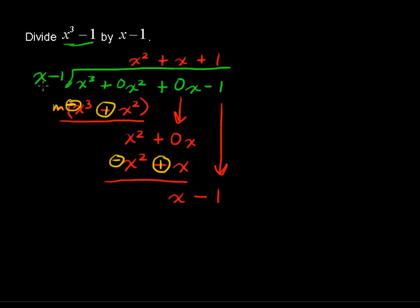And so 1 times x is x. 1 times negative 1 is negative 1. This time I will put the minus sign outside the whole thing because that's easy to see.